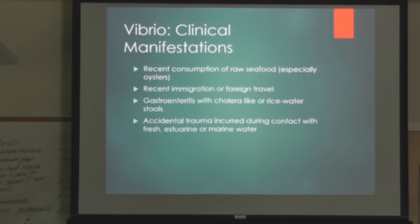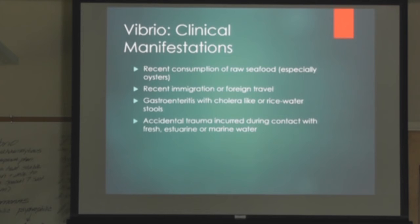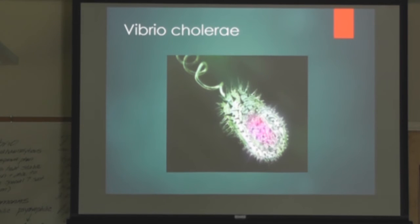Clinical manifestations of Vibrio infection include the presence of certain recognized factors: recent consumption of seafood, recent immigration or foreign travel, gastroenteritis with what they call 'rice water stools' — it literally looks like rice — and accidental trauma which can open up wound infections. Vibrios possess polar flagella, sheathed in liquid and unsheathed on solid media. They are basically pleomorphic, and all 12 species are oxidase positive.